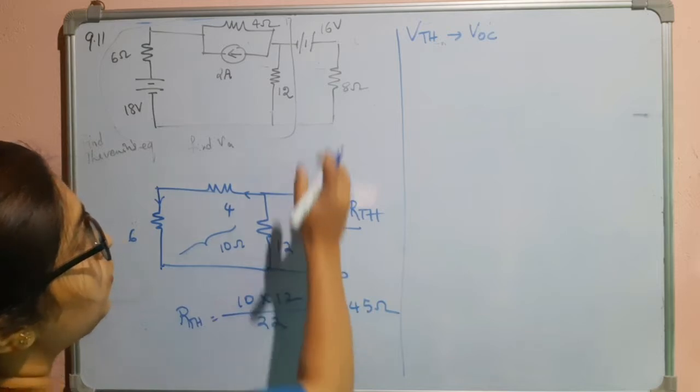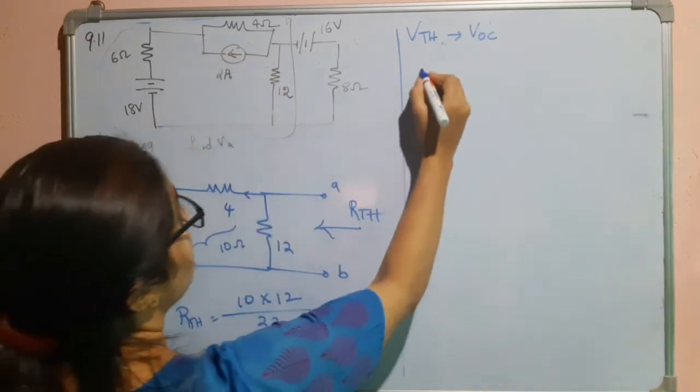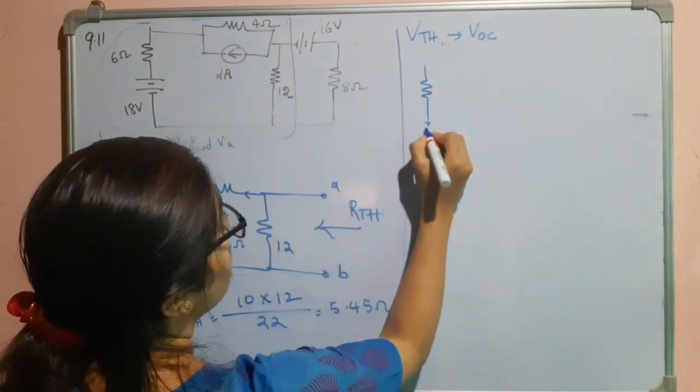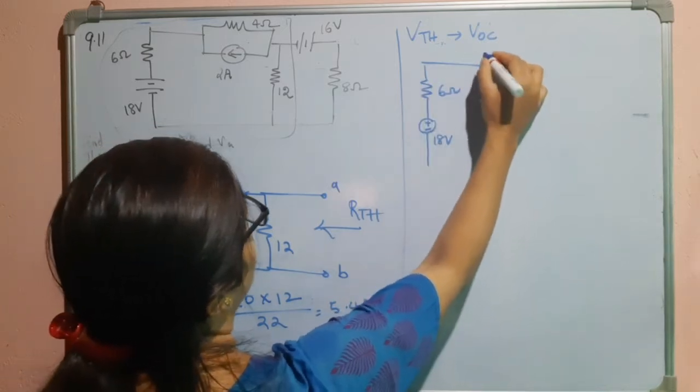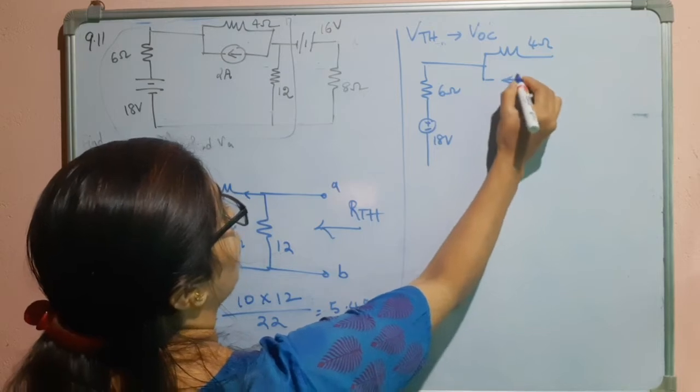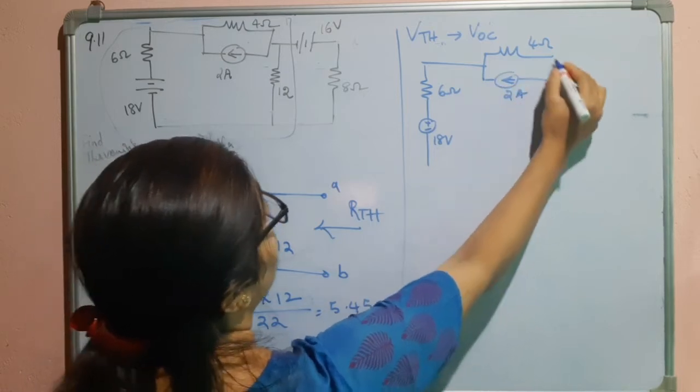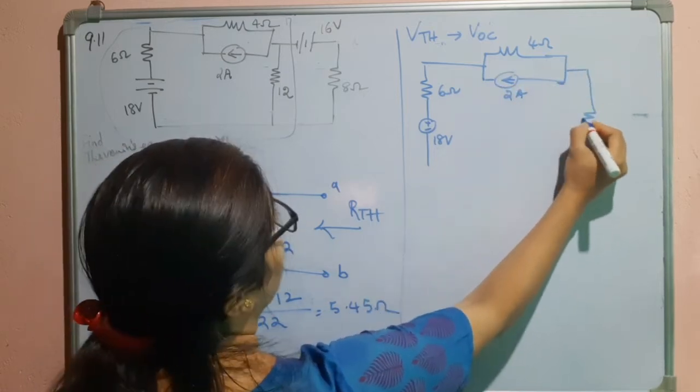Now, after finding RTH, we will bring back all the sources to its position. So, this is 18 volts. This is 6 ohms. This is 4 ohms and here it is 2 ampere. This one is 12.